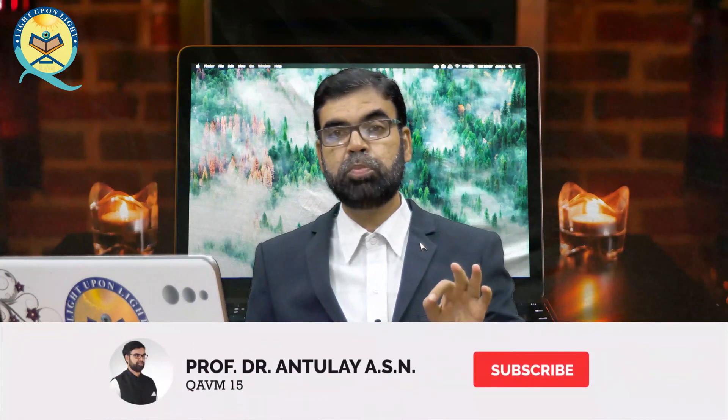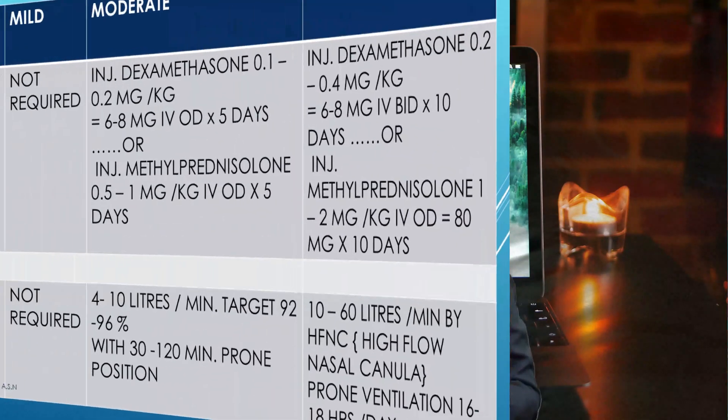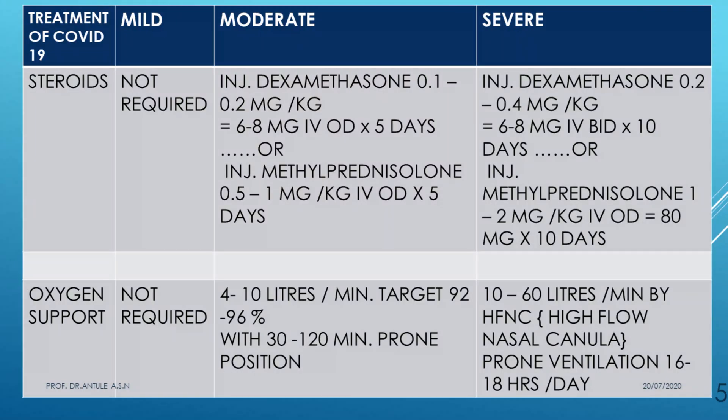In severe cases, 10 to 60 liters of oxygen per minute is given via HFNC (high-flow nasal cannula), administered in hospital. Prone ventilation is required for 16 to 18 hours daily in severe cases.